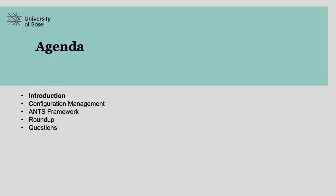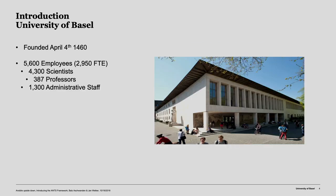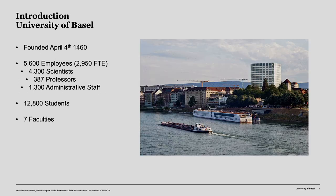The agenda for today will be a short introduction of our situation, because it's important to understand our setup and how the university is organized to understand why we made certain decisions. Then we'll talk about configuration management, then the main attraction — the wrapper around Ansible — then a short roundup and maybe questions. The University of Basel is quite an old one, founded in 1460. It has around 5,600 employees, 4,000 scientists, 1,000 administrative staff, and just under 13,000 students. It's divided into seven faculties, 29 departments, and is spread out across the city on 90 sites.